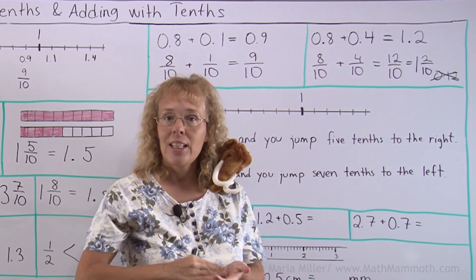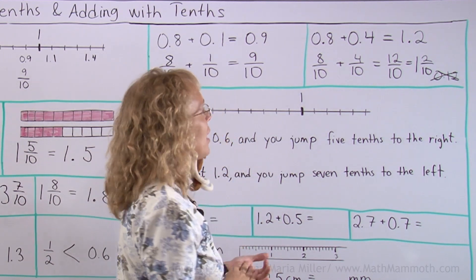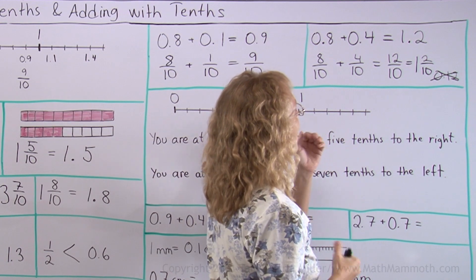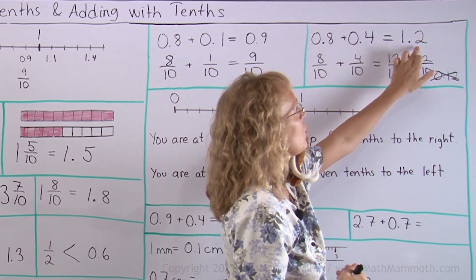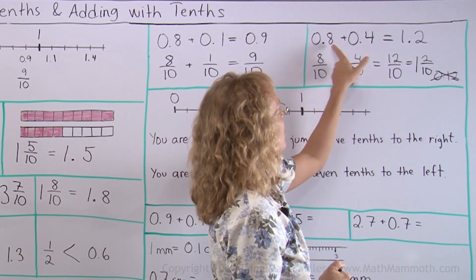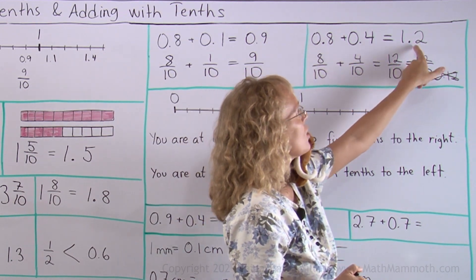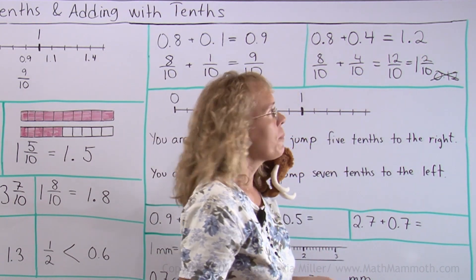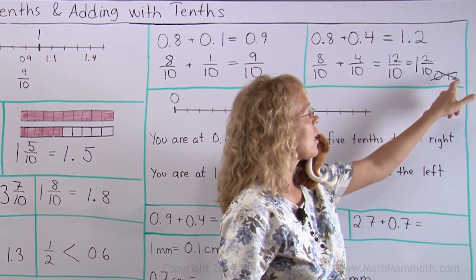You can basically add 8 plus 4 equals 12, but then you need to think of it having 1 whole here and 2 tenths. Or maybe you can think of the decimal point. You have to have tenths and tenths so you get tenths in your answer too, not 2 decimals like here.